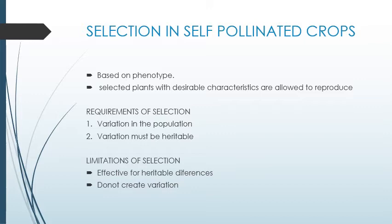a group of undesired or unrelated plants, and making the desired plant produce a progeny. The main aim of selecting phenotypically is that, since it is a self-pollinated crop, the genotype of the plant will be homozygous in nature. Selection comes into process only when variation is present, and that variation must be heritable. If you select a plant in a variable population and it does not have a heritable character, then selection will be ineffective. Selection does not create any variation; it just helps to improve the characteristics of the population.